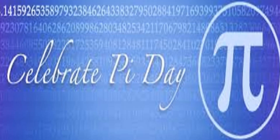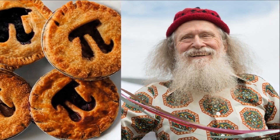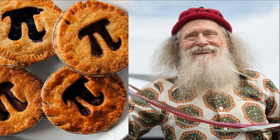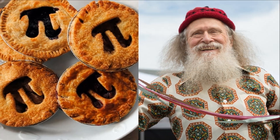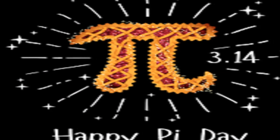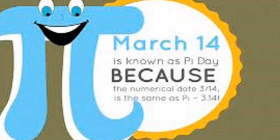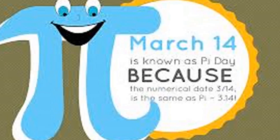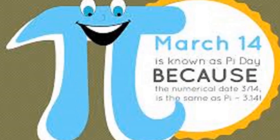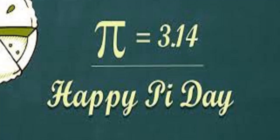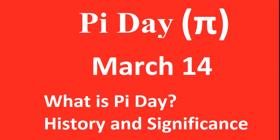Pi Day has been celebrated since 1988, when Larry Shaw organized the earliest known official celebration at the San Francisco Exploratorium. Pi Day is an annual celebration of the mathematical constant Pi, observed on March 14th, i.e. 3-14, since 3, 1, and 4 are the first three significant digits of Pi.